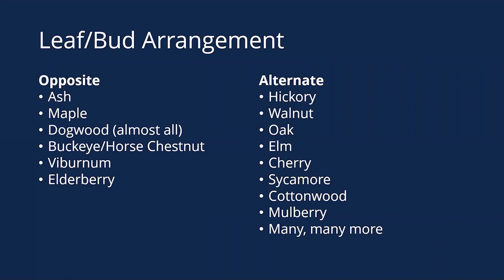A little bit more on bud and branch arrangement — this is the first thing I look for when identifying trees. If it is opposite, there is a smaller number of trees that fall within that group. In Illinois, our oppositely arranged trees are generally: ashes, maples, most dogwoods (though there is an alternate-leaf dogwood), buckeyes or horse chestnut, viburnums, elderberries, and a few others. If it's opposite, it's going to fall into that group.